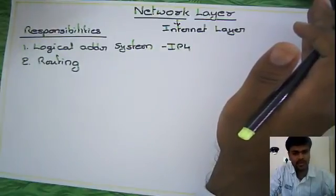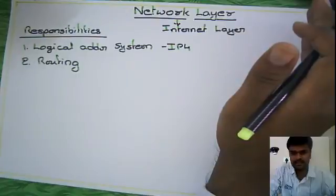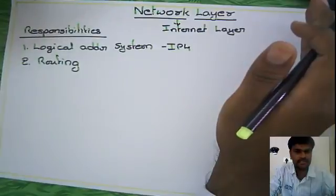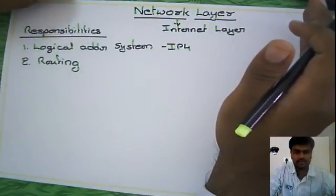Among all these existing paths at a particular router, it has to select the exact path or right direction towards the destination. That functionality will be done in the network layer also.